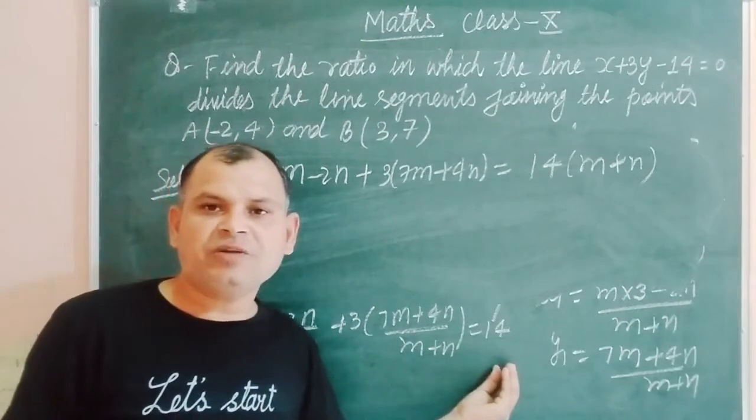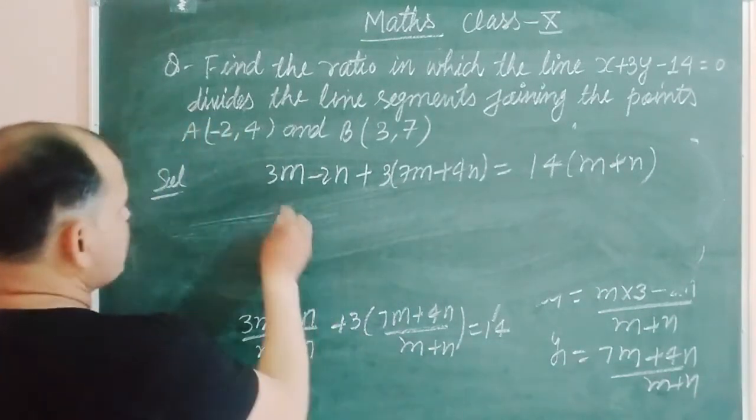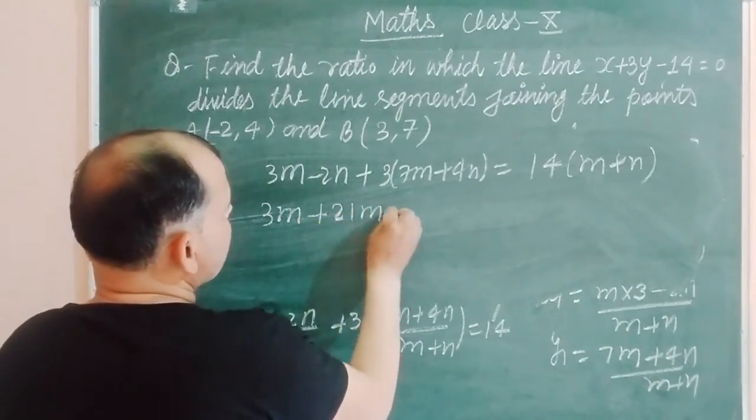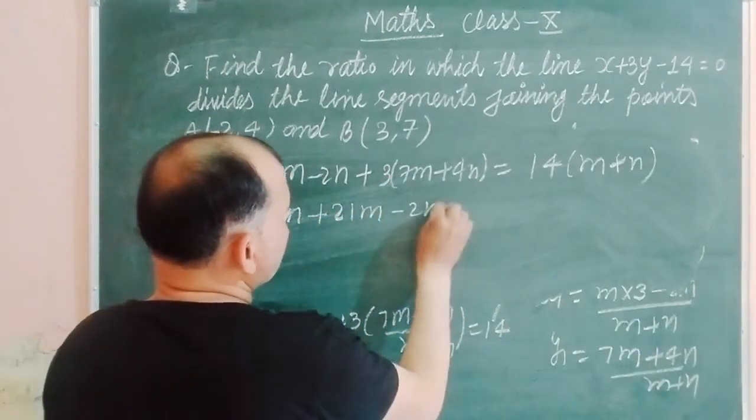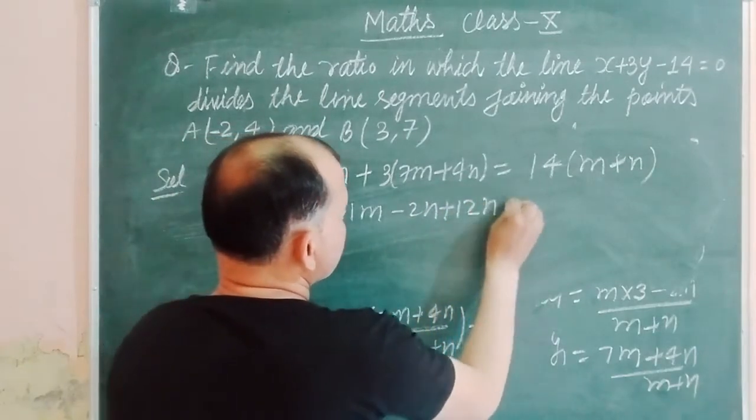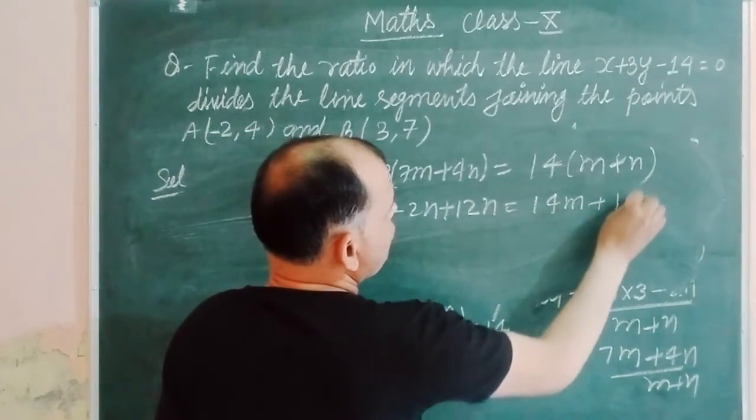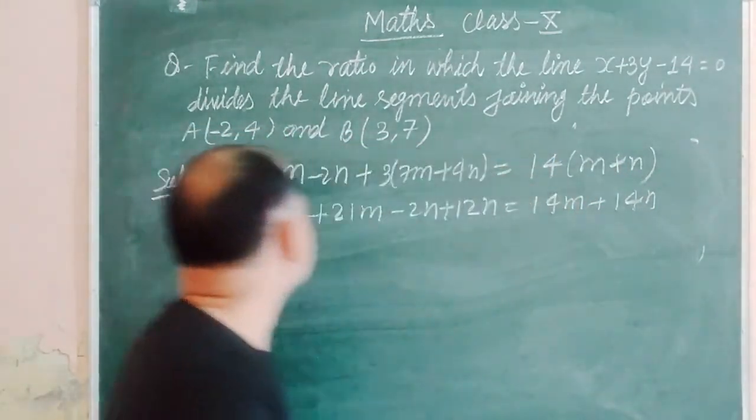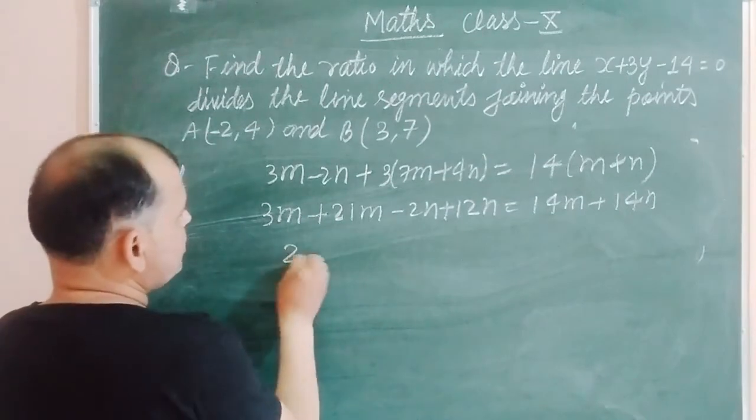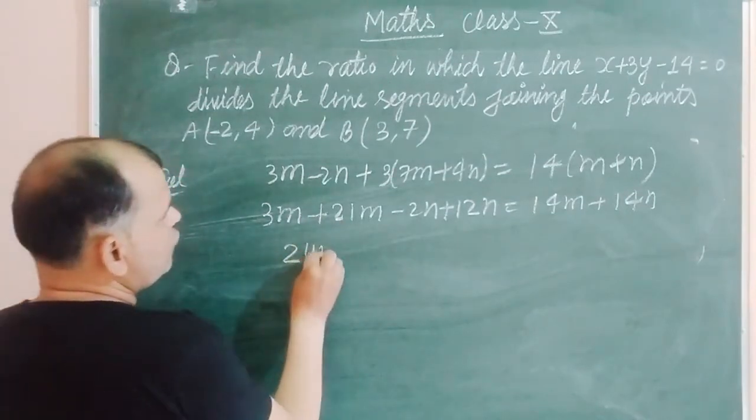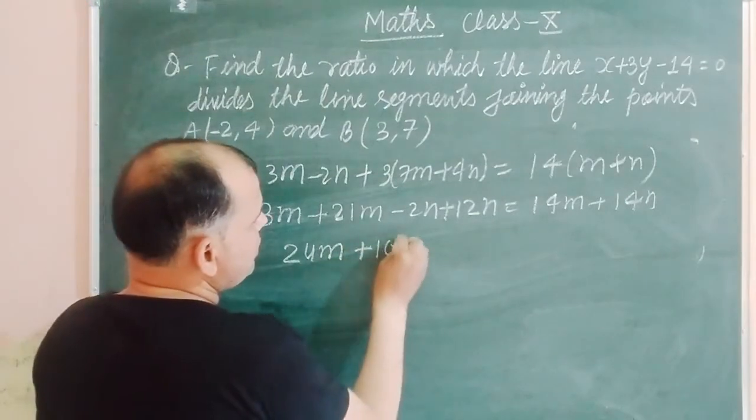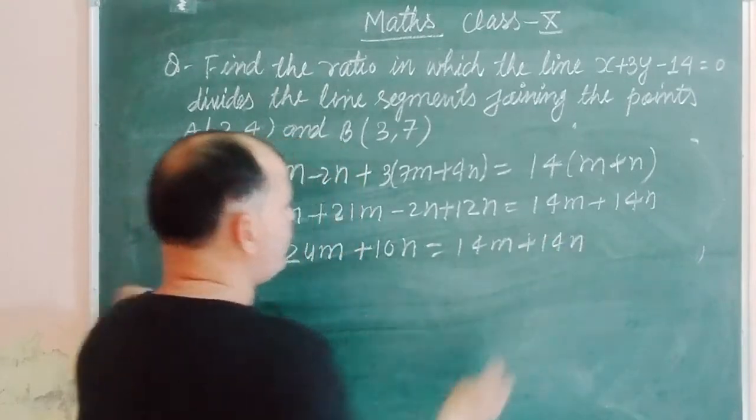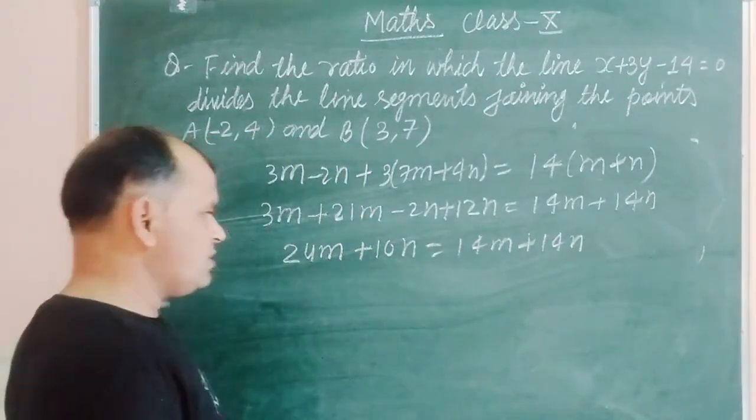So 3m plus 21m, that's 24m, minus 2n plus 12n is 10n, equals 14m plus 14n. Now we bring m on one side and n on another side, so 24m minus 14m equals 14n minus 10n.